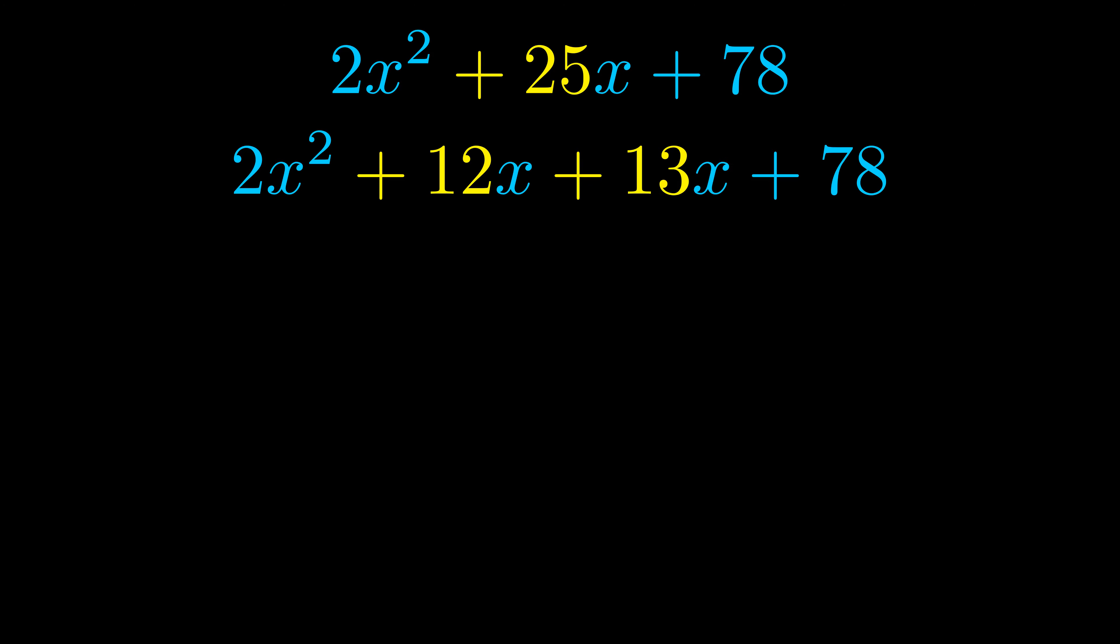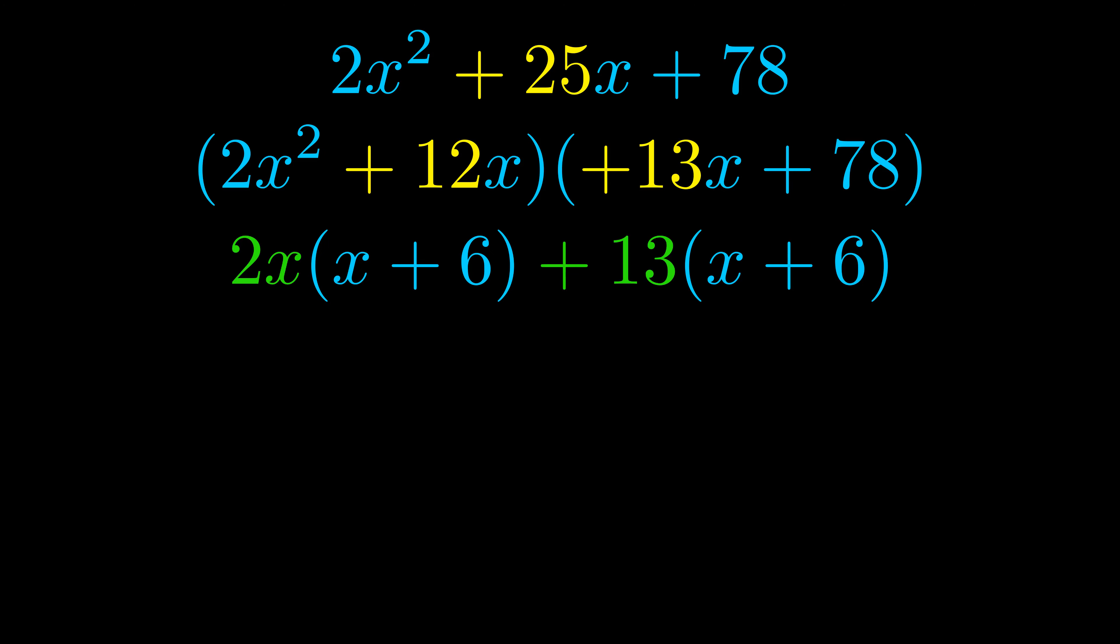Once we've done this, we put parentheses around the first term and the last term so that we can take the greatest common factor out of both terms. We can see the greatest common factor is now outside in green.